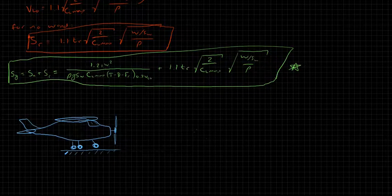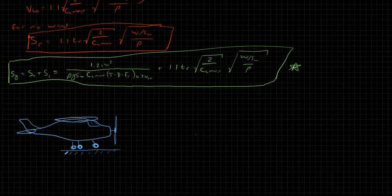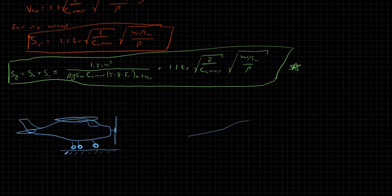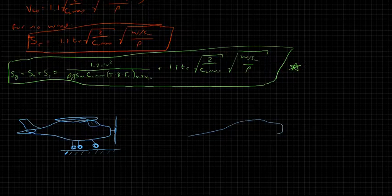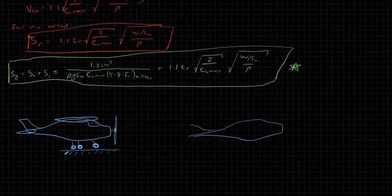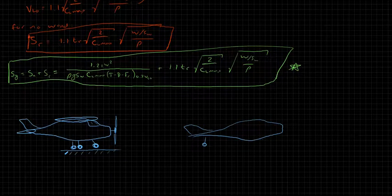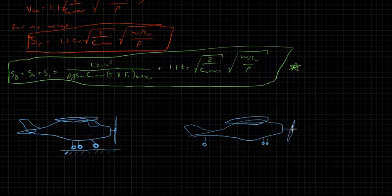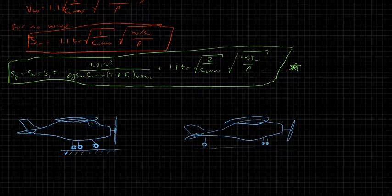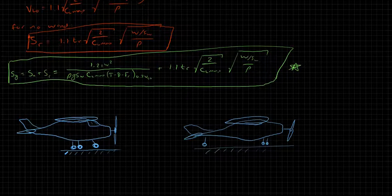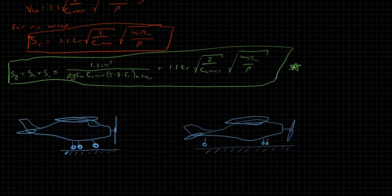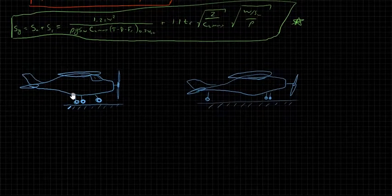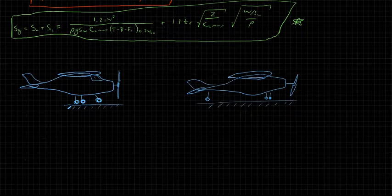But there's also another configuration, which is tail dragger, which you've likely seen. And in a tail dragger configuration, you look something more like this. You start off at a high angle of attack, and therefore a high lift coefficient. And with a tail dragger, let me come down here a little bit lower.